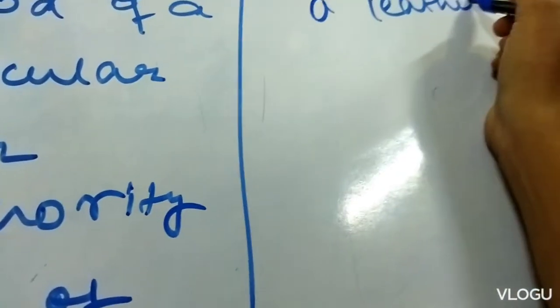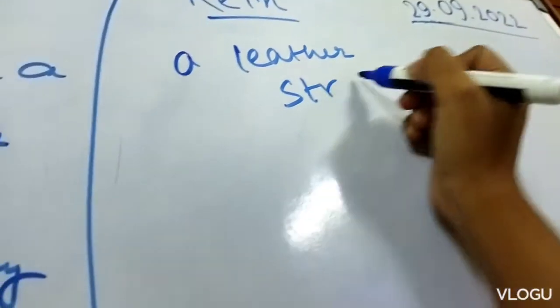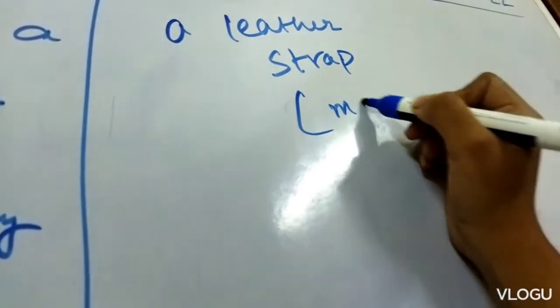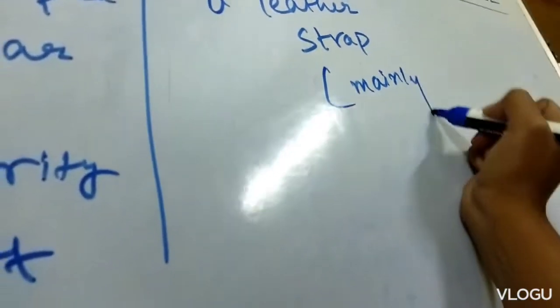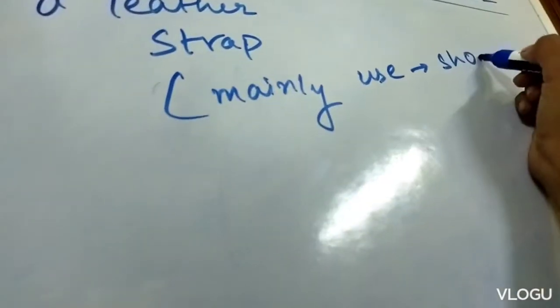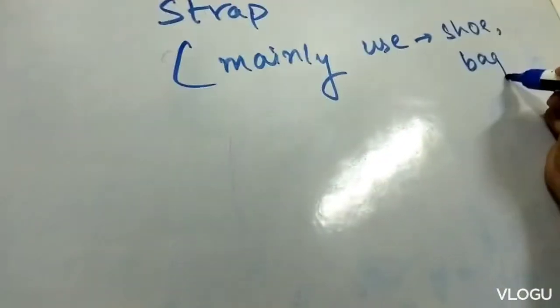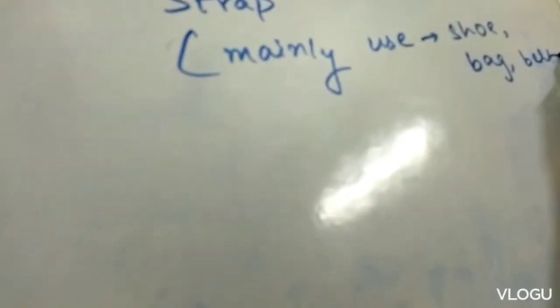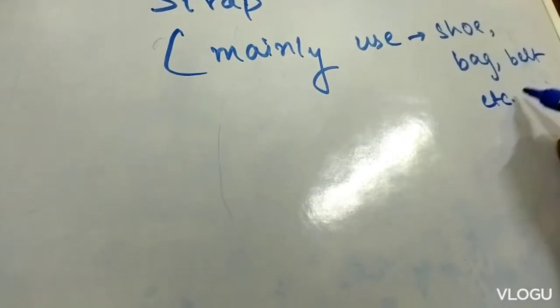This rein is a leather strap that we can mainly use in shoes, bags, belts, and etc.